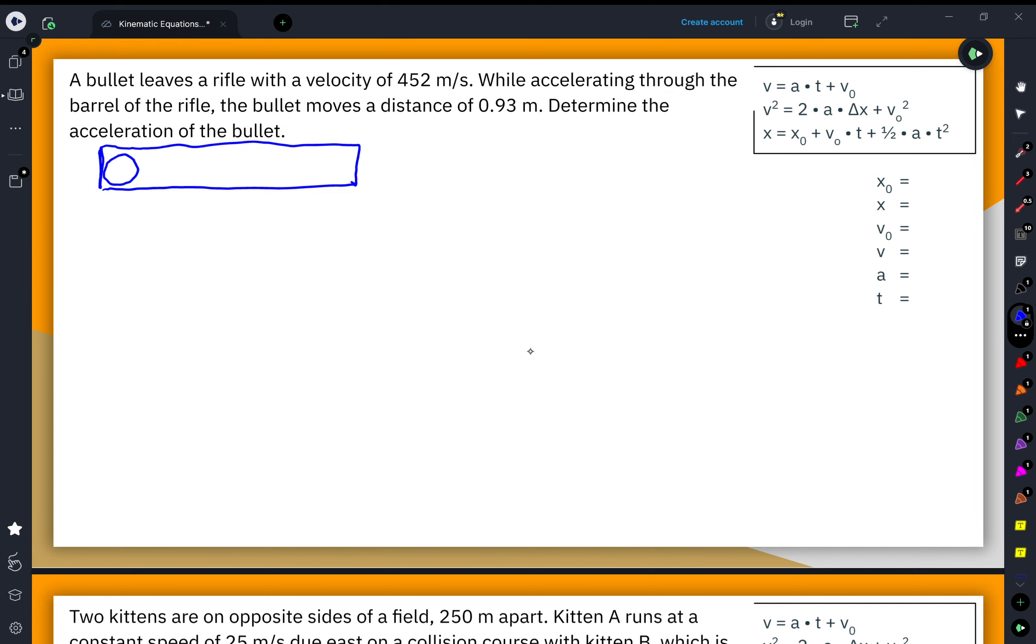Then it gets fired and this thing accelerates. So it goes faster and faster and faster before it finally leaves the barrel of the gun. This is where the bullet starts. This is where the bullet ends up.